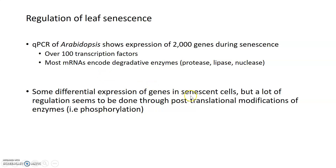There is some differential gene expression in senescent versus mature post-mitotic cells, but interestingly, a lot of the regulation seems to occur at the level of post-translational modifications to these particular enzymes. These enzymes are apparently always present whether the leaf is in maturity or going into senescence, but whether they are active or not is regulated post-translationally — by phosphorylating, dephosphorylating, or activating these enzymes in another way. So it's not necessarily a change in expression level of senescence-related genes, but rather post-translational regulation that activates the programmed part of senescence.